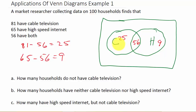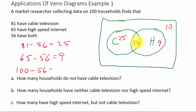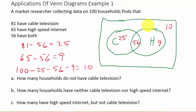Now let's look at the area outside the circles — that's the universal set, all 100 households. To find the households outside: 100 minus 25 (cable only) minus 56 (both) minus 9 (internet only) equals 10. So 10 of those 100 households have neither cable television nor high-speed internet.